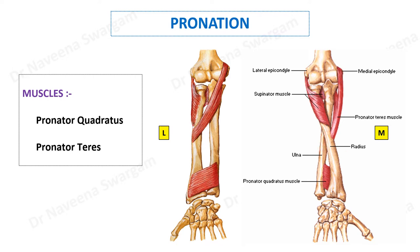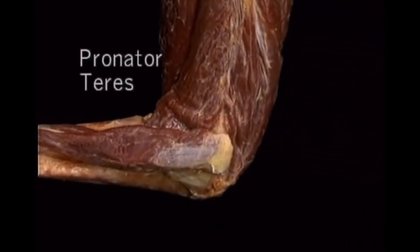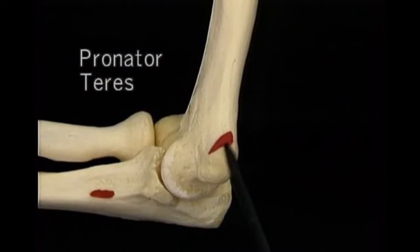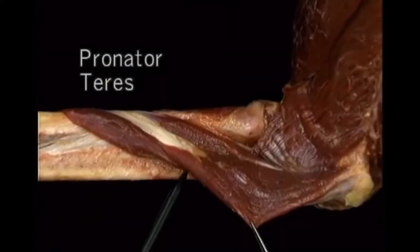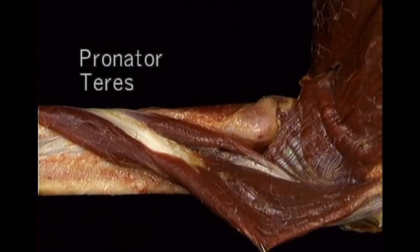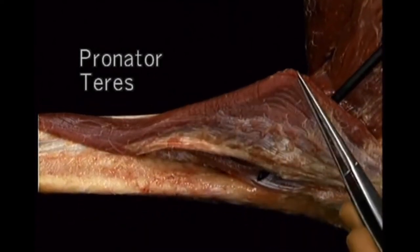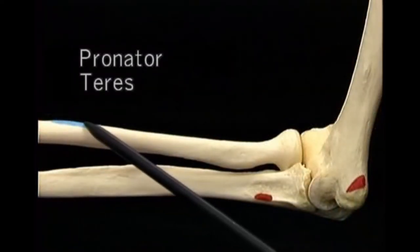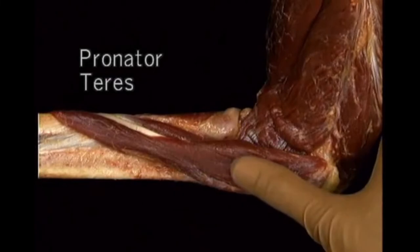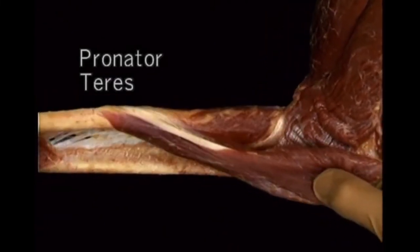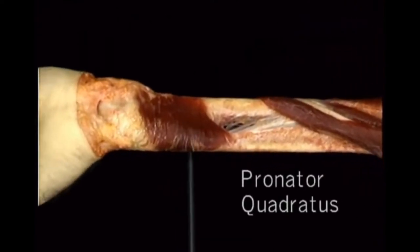Let's understand this by looking at the following video clip. Here is the pronator teres with its origin sites with two heads inserting onto the radius. When it contracts, it causes rotation of the shaft of the radius around the ulna.